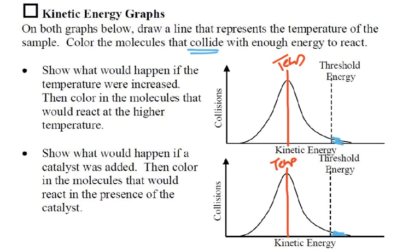On the first graph, show what would happen if the temperature were increased, then color in the molecules that react. If I increase the temperature, I'll have a higher average kinetic energy, which means the curve is going to be shifted to the right, and now all these particles are going to be able to react. On the second one, if I put in a catalyst, the threshold energy moves back a little bit — that's the new threshold energy — and now all those particles are going to be able to react. Those are two ways to speed up the reaction.